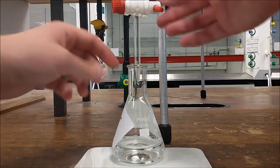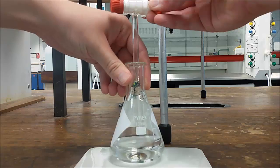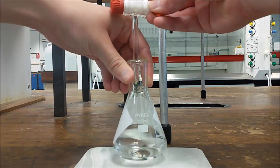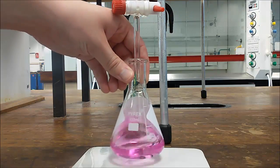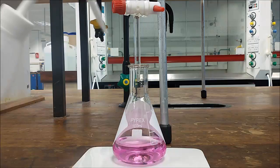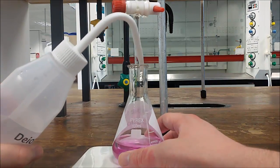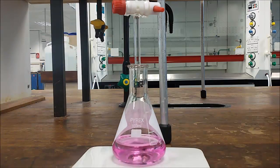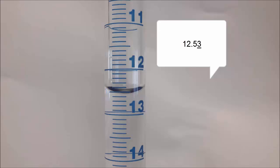When close enough, add the titrant dropwise. When the solution turns pink, rinse the burette tip with water. Read the volume with two decimal places and subtract the initial one.